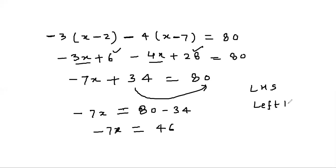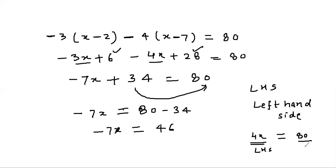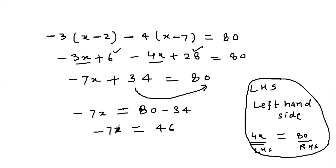Here, if we have -7x + 34 = 80, we want only x on the LHS, so we can divide the whole equation by -7. We get x = 46 divided by -7, and since we cannot cancel, this will be the answer.